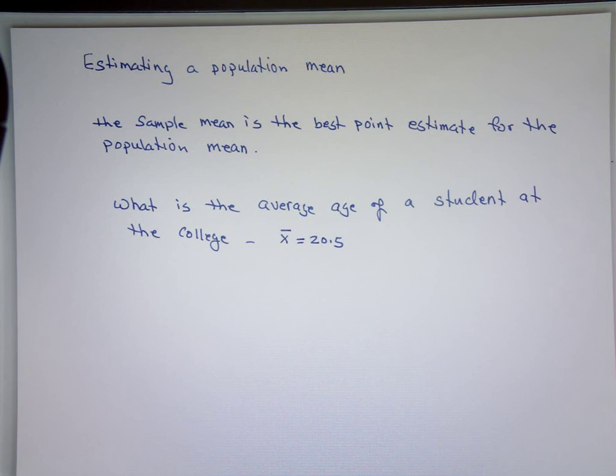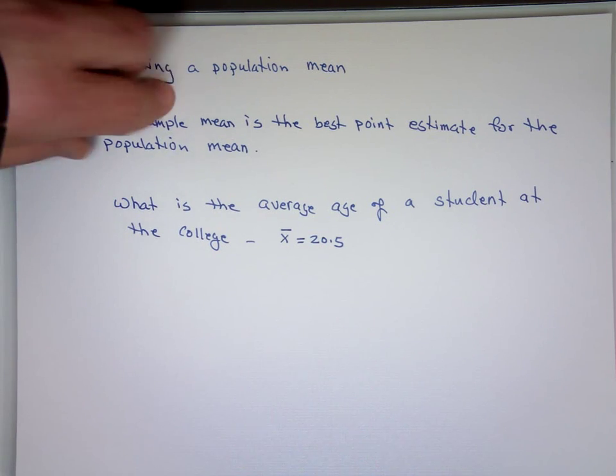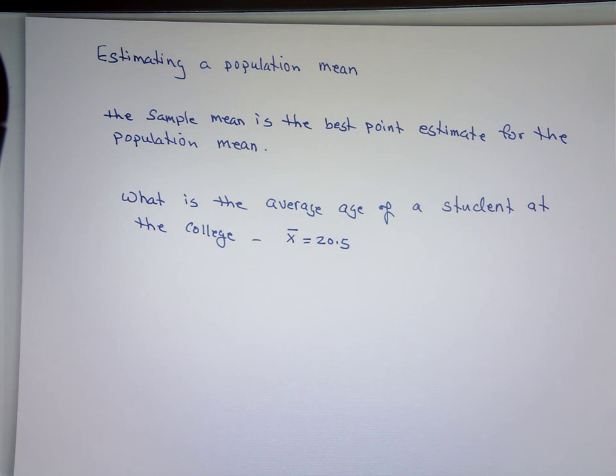So if someone asks you, what is the average age of a student at our college, you have to say 20.5. Because the sample mean, the sample average, is the best point estimate. Just like before, I screwed up with my sample because if I picked different students, that average will be in the 30s, 40s maybe. But most likely in the 40s.